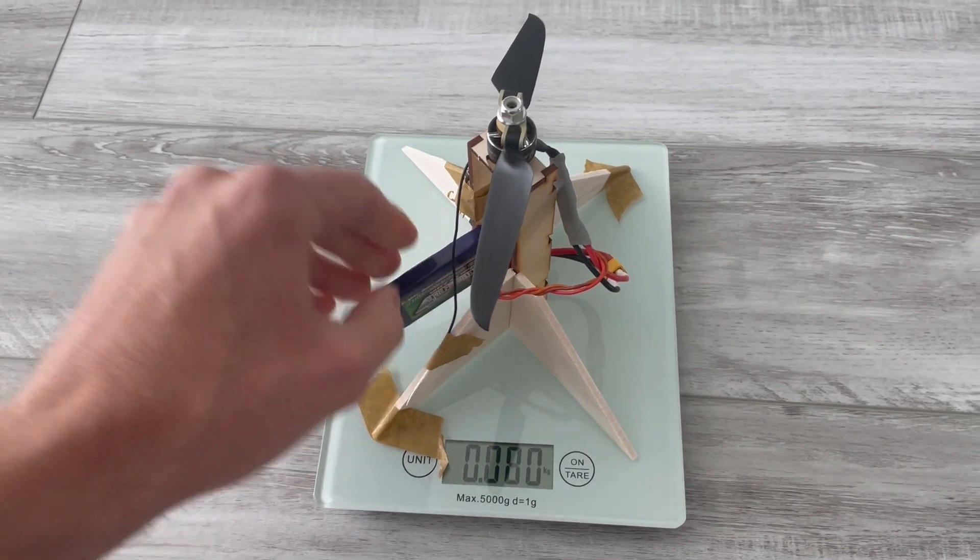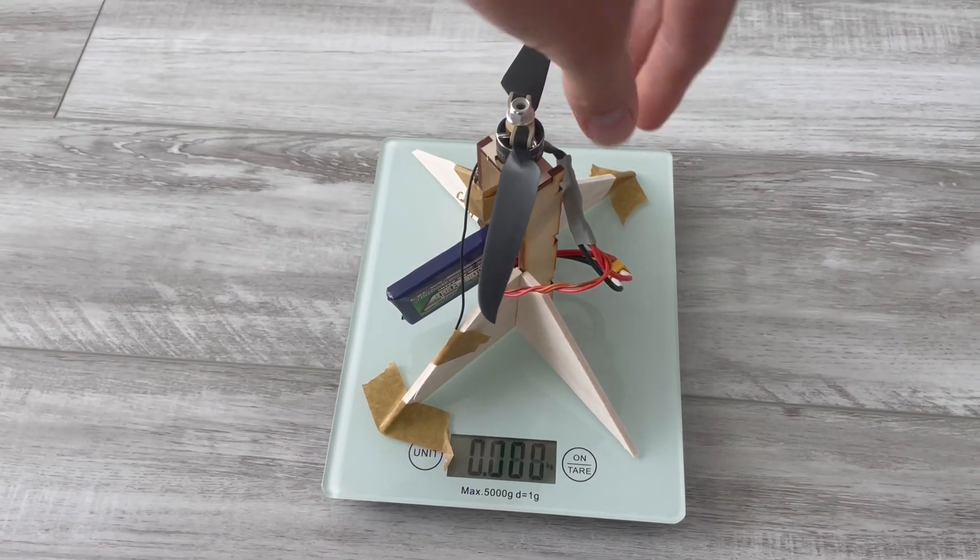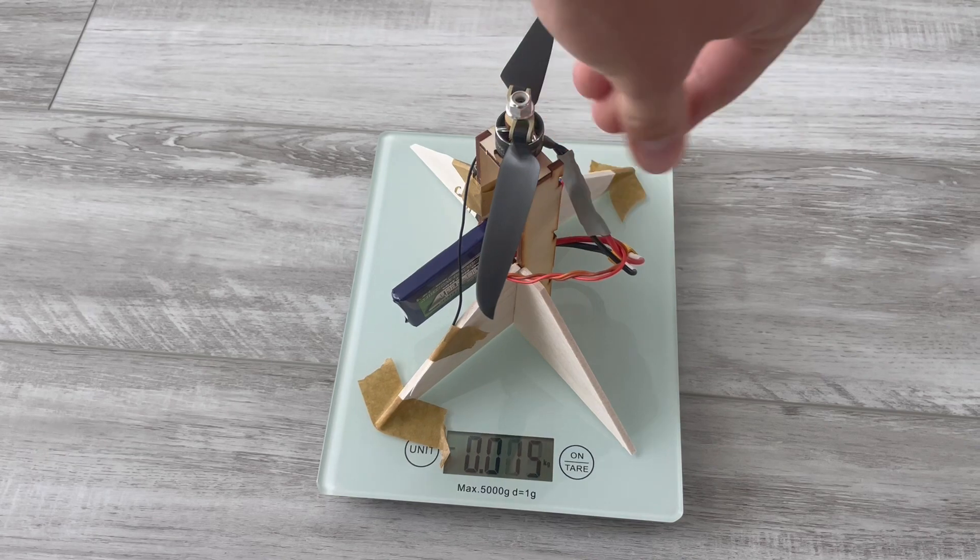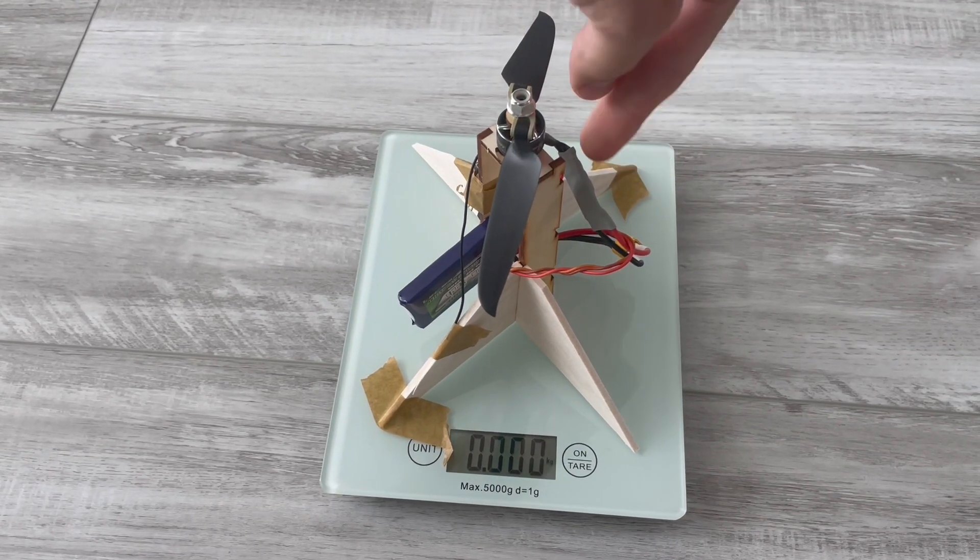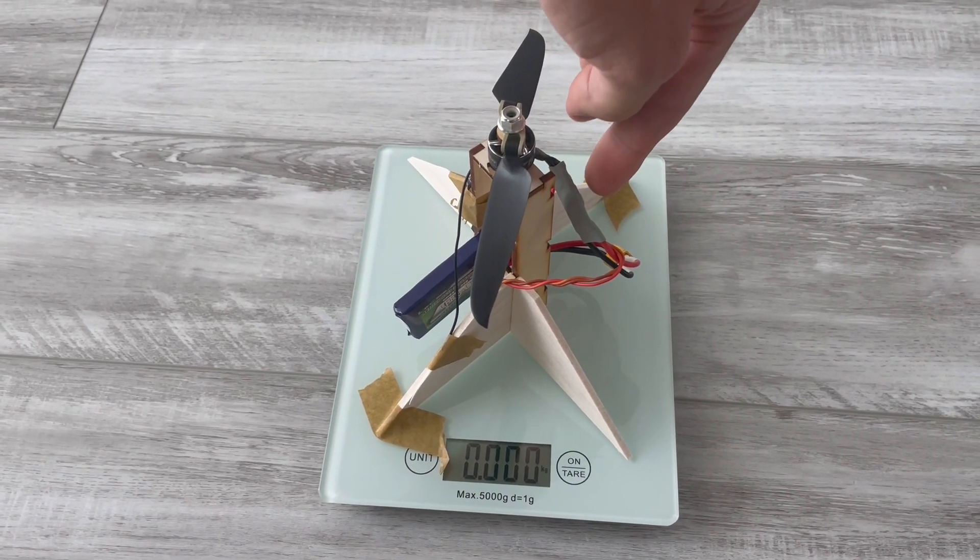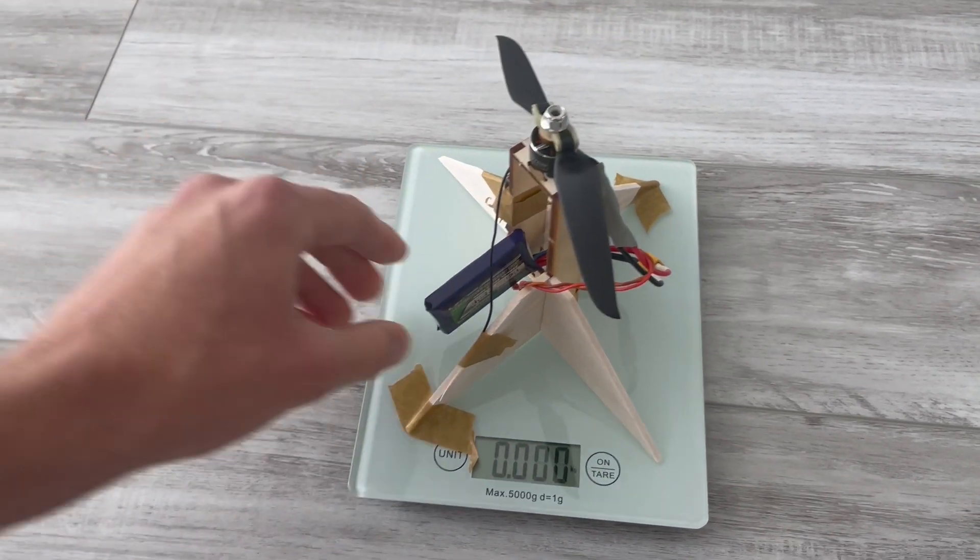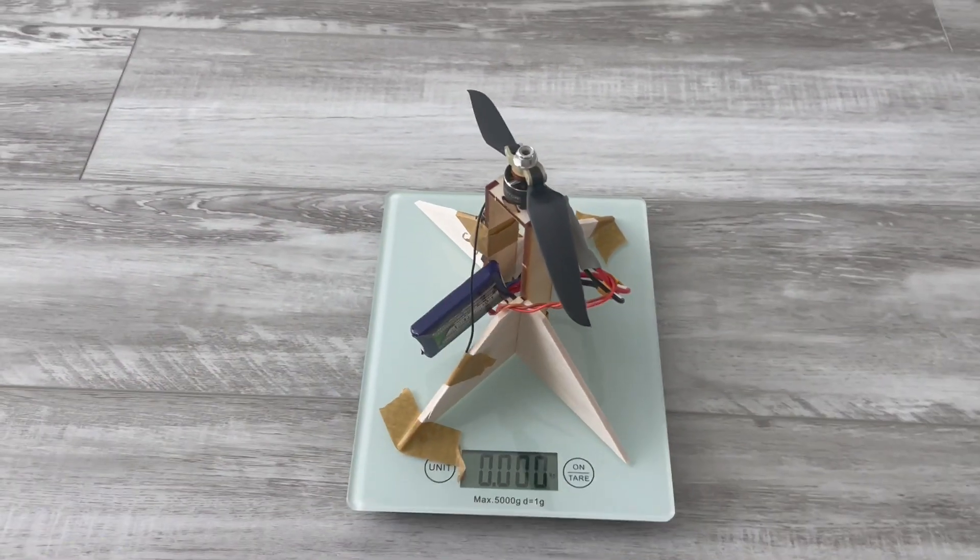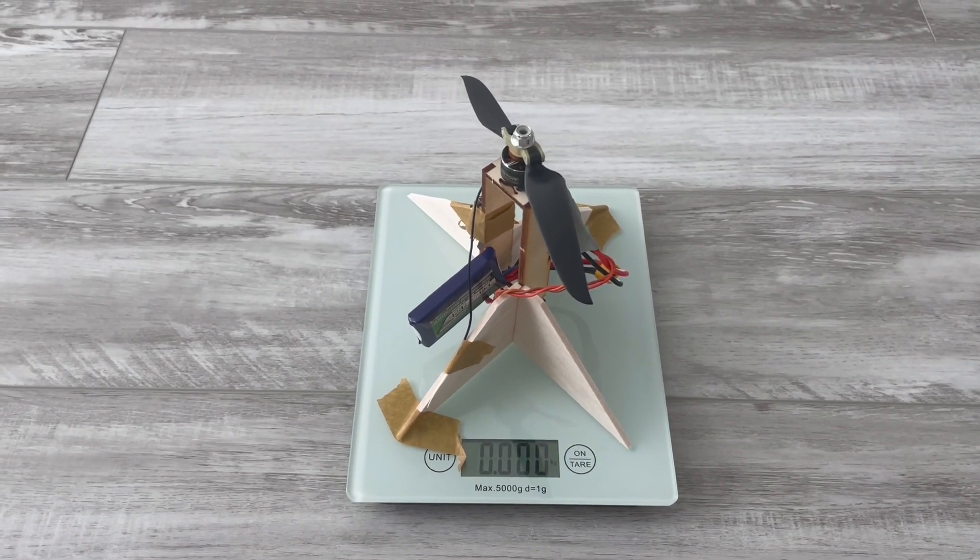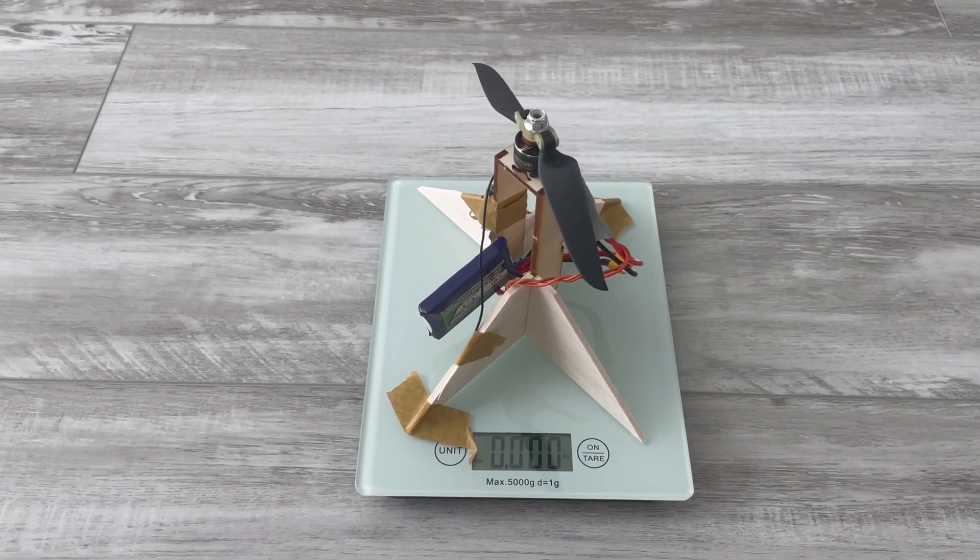Yeah you can see that the more we run, the less thrust we get from this. So the ESC is nearly warm, it's 21 amp. Motor is warm as well and battery's just normal temperature. Let's get another run.